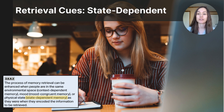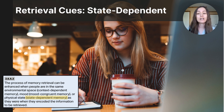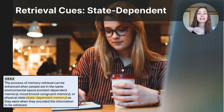Sometimes your internal state — your physical or mental condition — can act as a retrieval cue, helping you access memories tied to that same state. This is called state-dependent memory. It's similar to mood-congruent memory, but where mood-congruent memory is tied to an emotion, state-dependent memory can be tied to a physical or mental state, such as drowsiness, mental alertness, or being under the influence of a substance. For instance, if you learned something while caffeinated and feeling highly energized, you might recall that information better when caffeinated again.